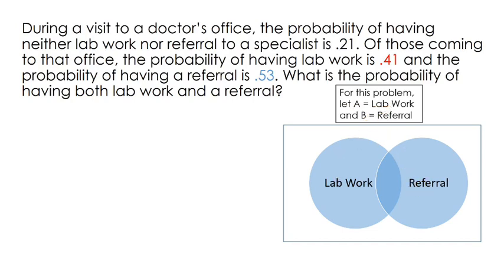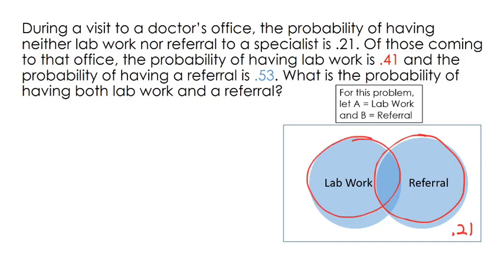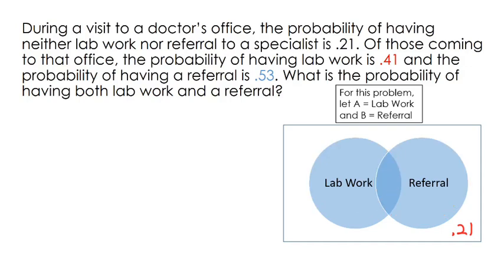Thinking out loud: we don't know the probability of both. The only thing we really know at this point is that there's a 21% chance of neither. We know that B is 53% and A is 41%, but we don't know the overlap — we don't know the intersection.